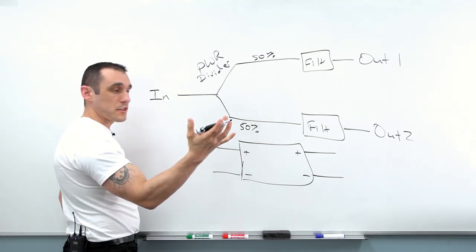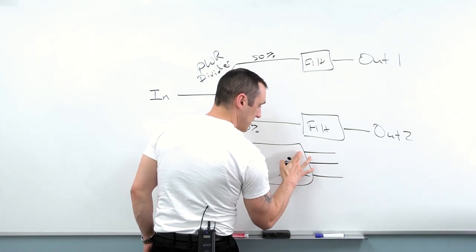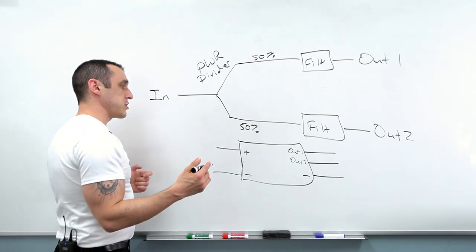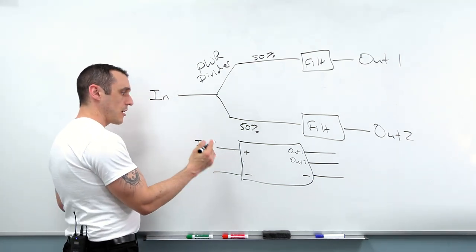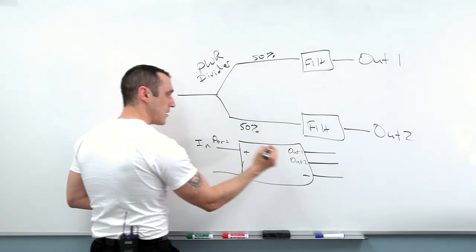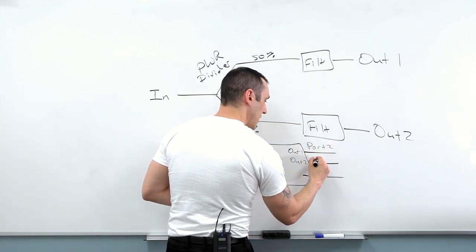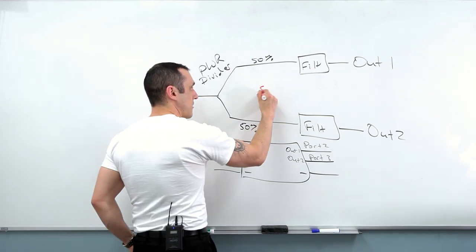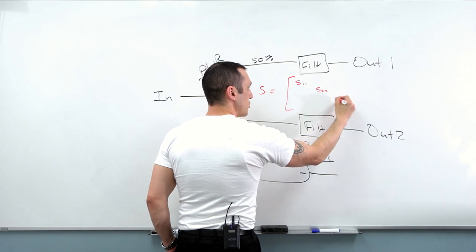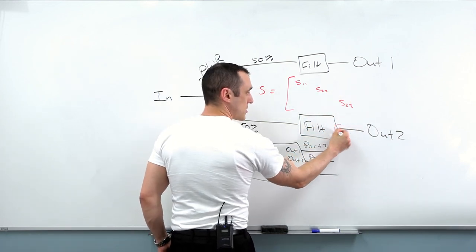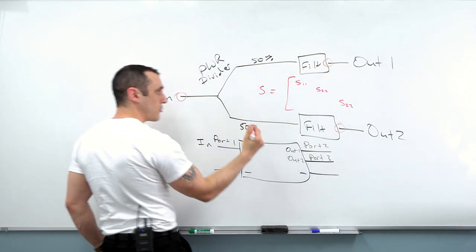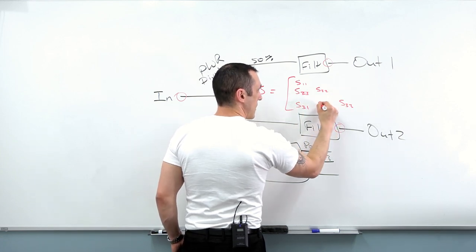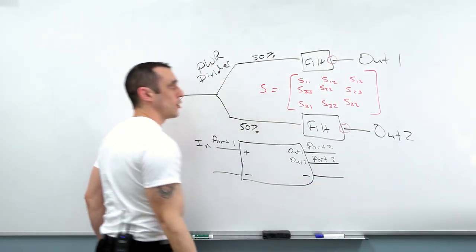Here we actually have three ports, so we would have an additional port. We could call this port one on the input, port two for out one, and port three for out two. If we were to write out the S-parameter matrix for this entire circuit, we would have S11, S22, and S33 values which represent reflections off these three ports, and then we would have our transfer S-parameter coefficients: S21, S31, S32, and so on. This gives a total of nine different S-parameters.